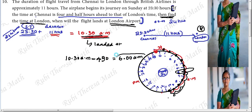You reach at 6 AM as per London time. So: 9:30 AM or 10:00 AM — let's confirm. 23:30 is nothing but 11:30 PM. As per London time, the flight lands at 6 AM.